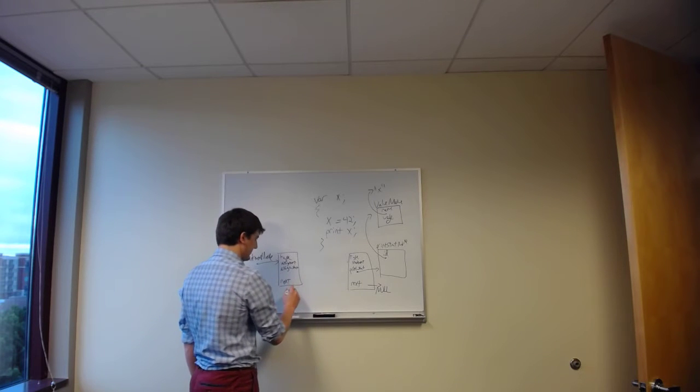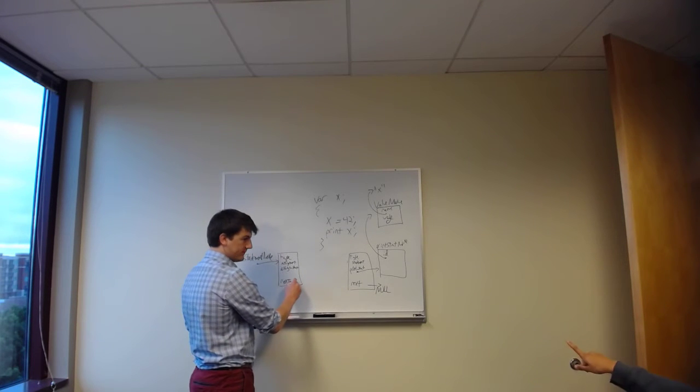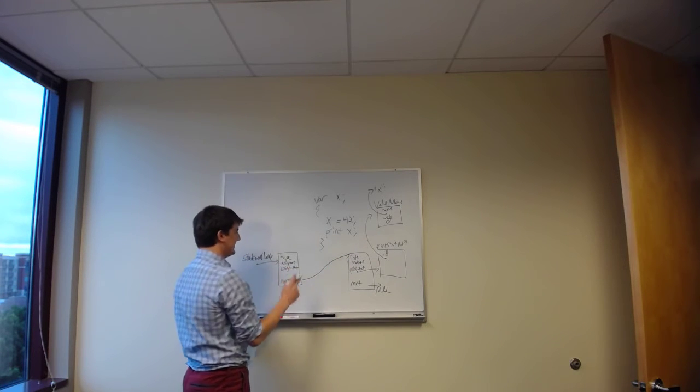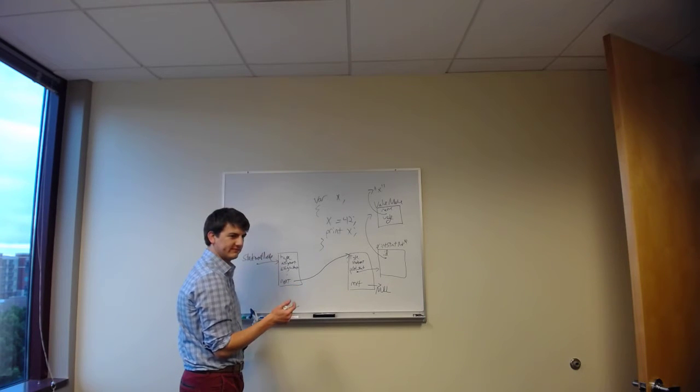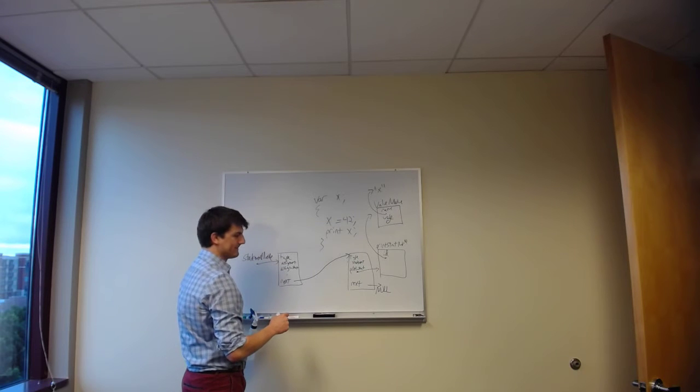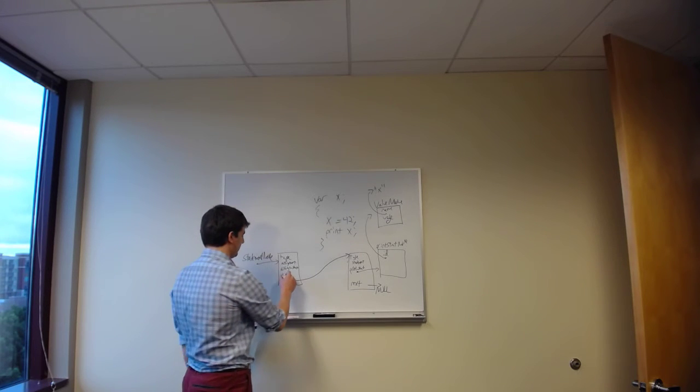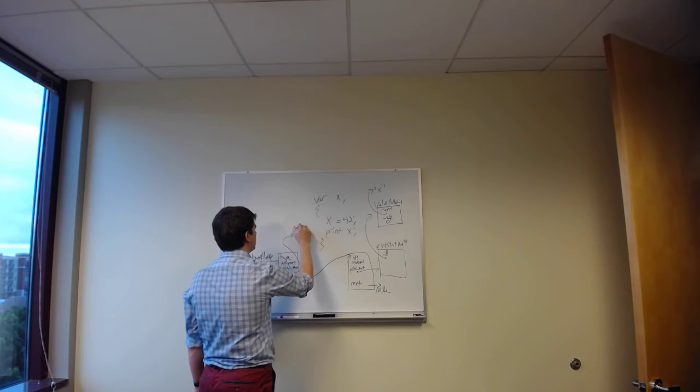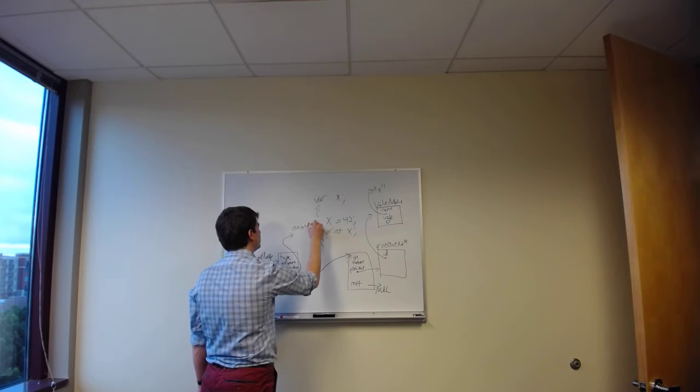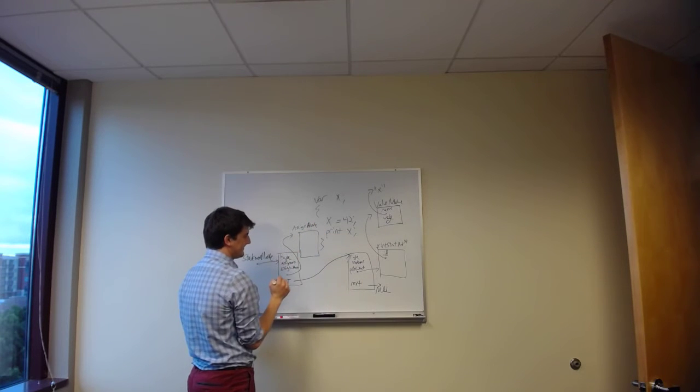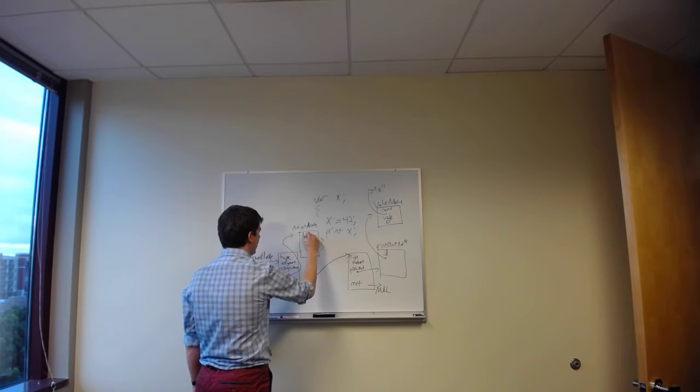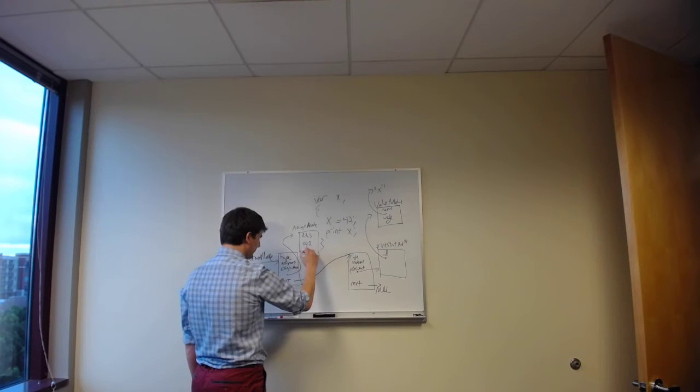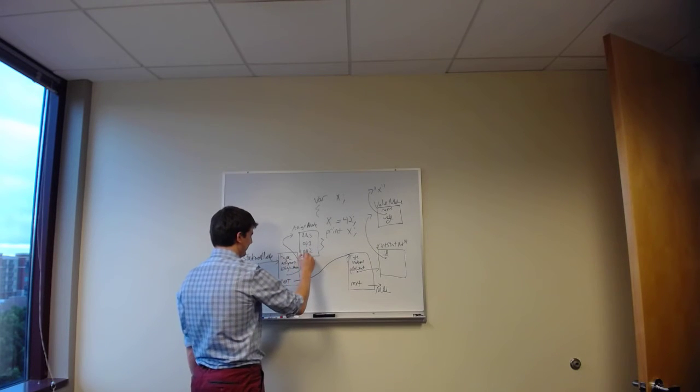This assignment statement node, what does this point to? It's going to point to an assign node. We'll call it an assign node for now. What fields does that have? The left-hand side, I'm going to call that LHS. Operand 1 - op 1, and operand 2 - op 2, and op.